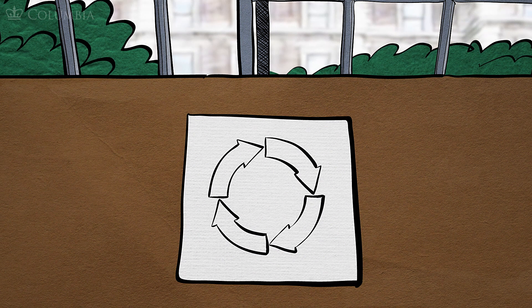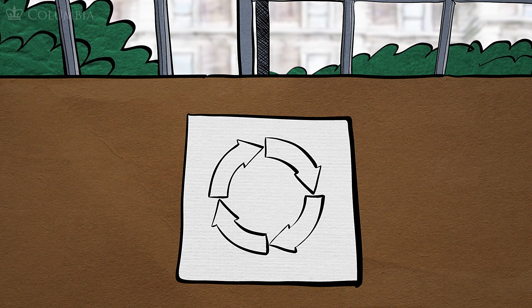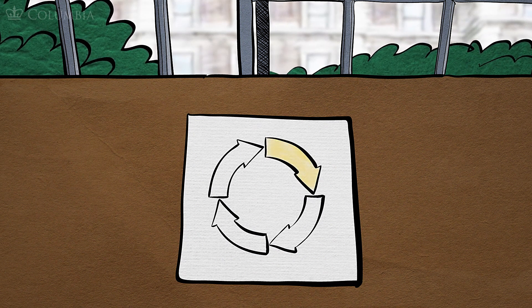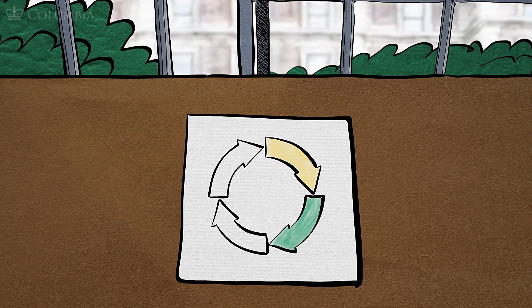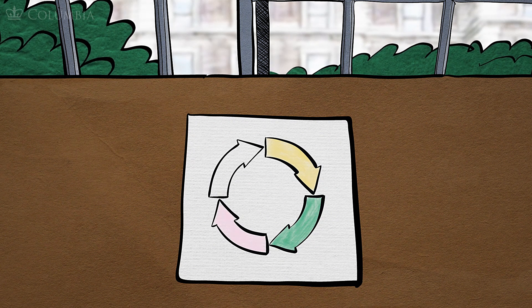This life cycle, in its broadest strokes, tells the researcher first to come up with an idea for a research project. Next, collect what's needed for the project. Then, work with that collection to reach the goals of the project.